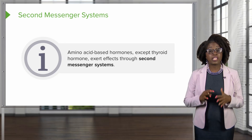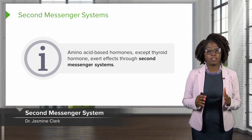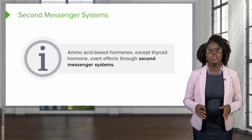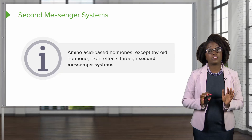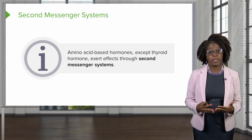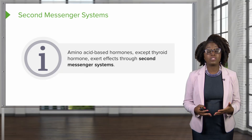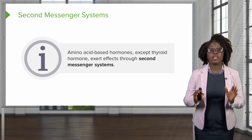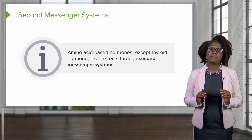Let's take a closer look at how hormones activate genes. Since they cannot go directly into the cell because they're not lipid-based, amino acid-based hormones, except for thyroid hormone, are going to exert their effects through something called second messengers.